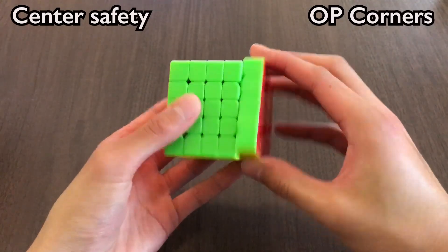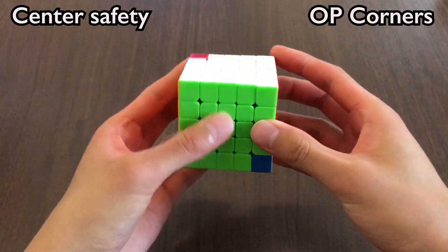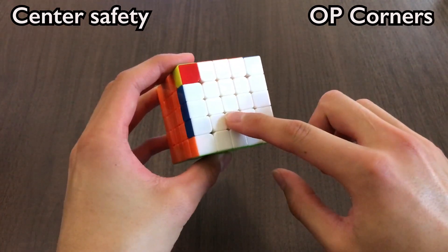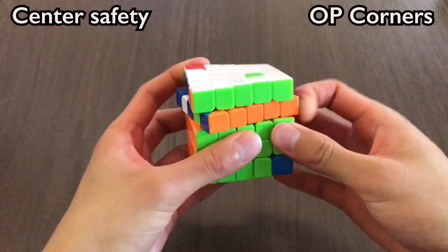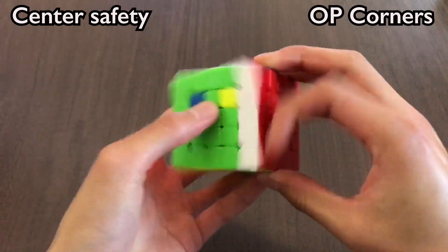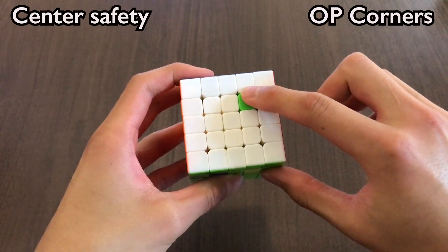The reason we execute centers first is because some algs are not center safe. For example, old poppin' corners doesn't look like it affects the centers, but it's actually shifting the position of solved centers. For example, if centers weren't solved and we did corners, it shifted the position of this green center.